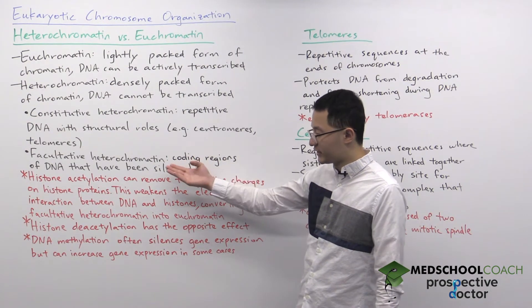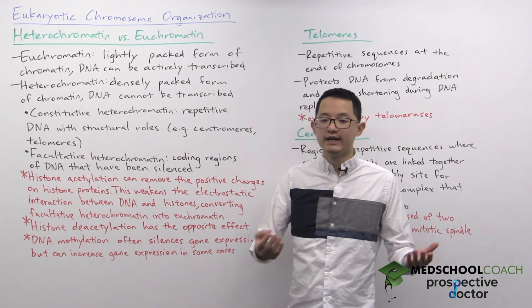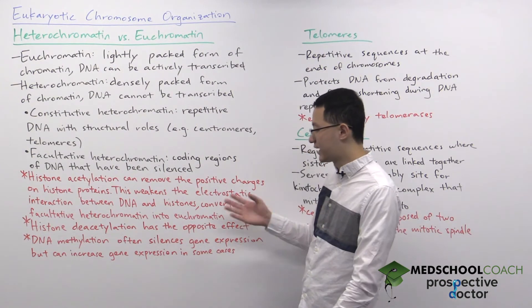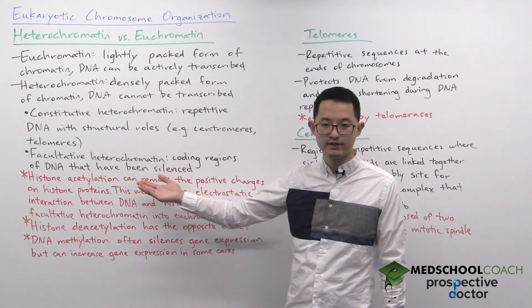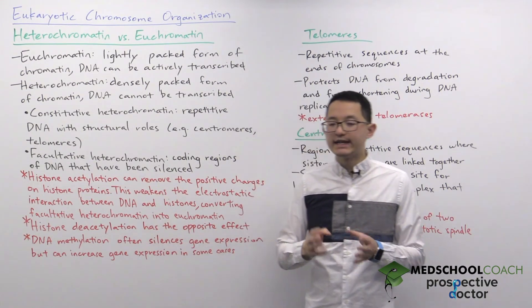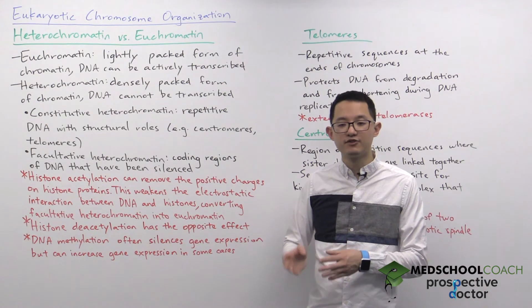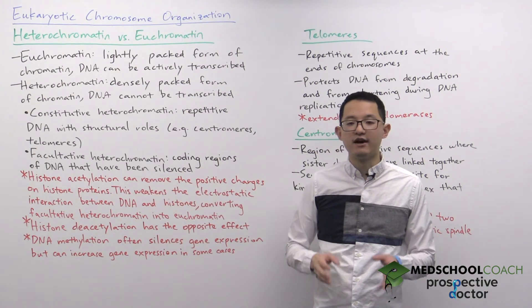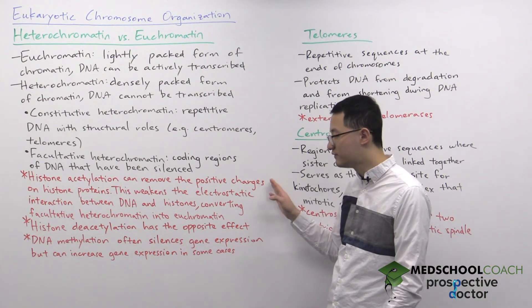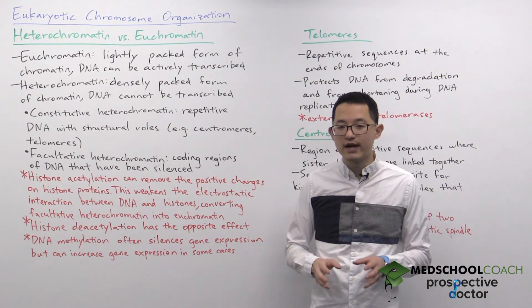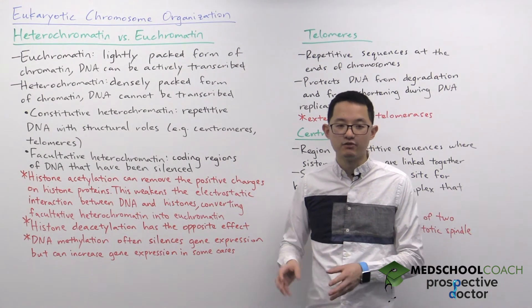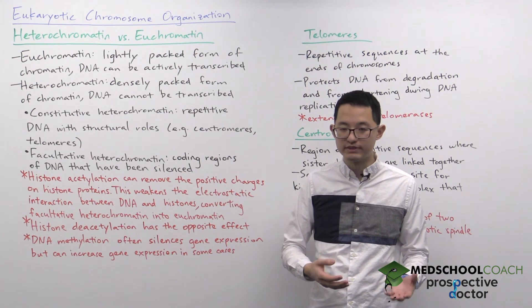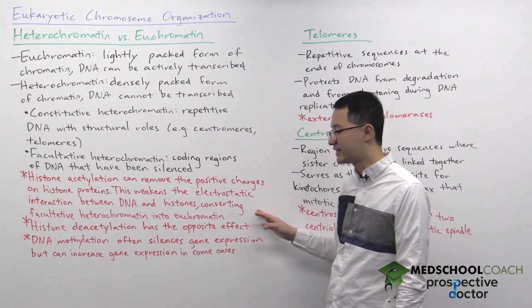For facultative heterochromatin, it's possible to switch between the inactive heterochromatin form and the active euchromatin form. One mechanism for how this can occur is through histone acetylation and deacetylation. DNA has a negative charge and is attracted to the positive charge of histone proteins. Histone acetylation adds an acetyl group to the side chains of positively charged basic amino acids, removing the positive charge and weakening the electrostatic interaction between DNA and histone proteins. This makes the chromatin less densely packed, converting heterochromatin into euchromatin so the gene can now be expressed.